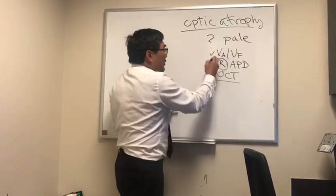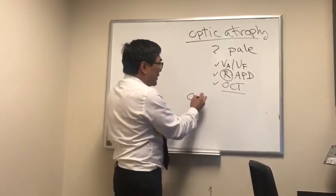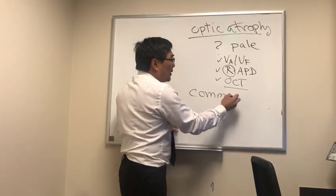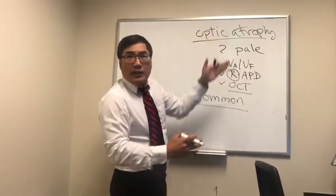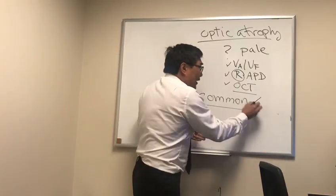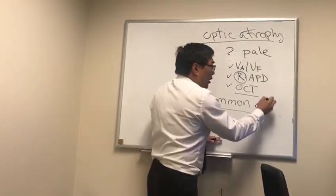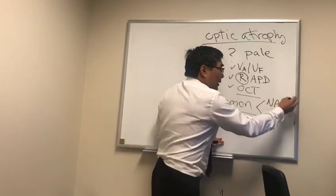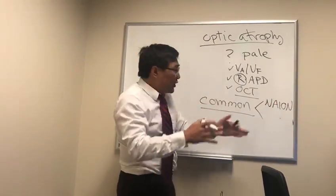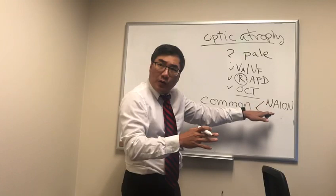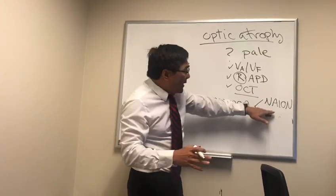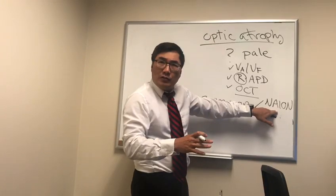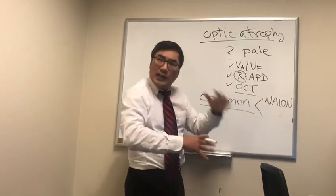If we're sure that it's pale and we have an optic neuropathy, then common things are common. The most common cause of unilateral optic atrophy in an adult in a vasculopathic patient is old non-arteritic anterior ischemic optic neuropathy. If we can get the record and show that this patient had a swollen disc before, has vasculopathic risk factors, and a small cup to disc ratio in the fellow eye, then we can be pretty certain that it was old NAION as long as it doesn't change over time.